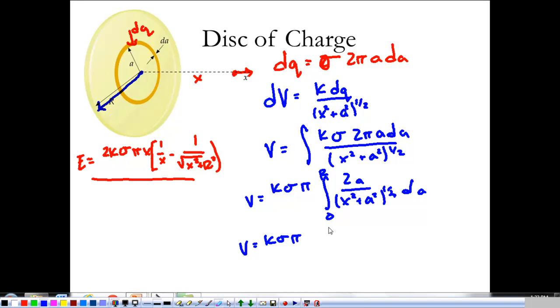Same thing is going to apply, and we're going again from zero to R. K·σ·π, and when we take that integral, we're going to have X² + A² to the 1/2, and then we're going to divide by -1/2, so we get -2 from zero to R.